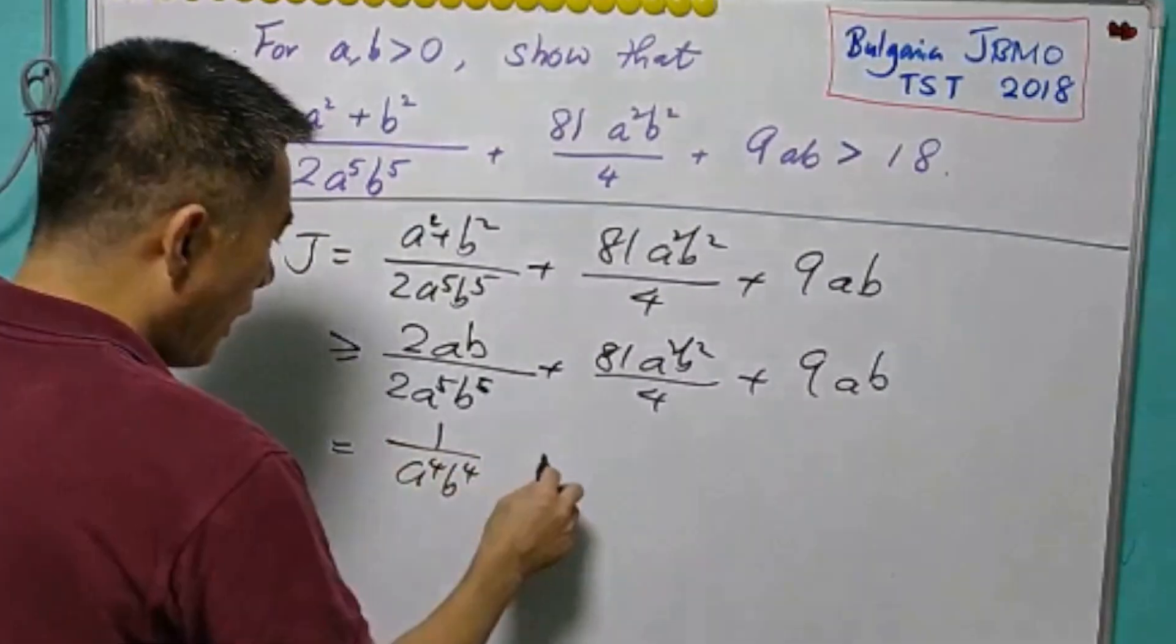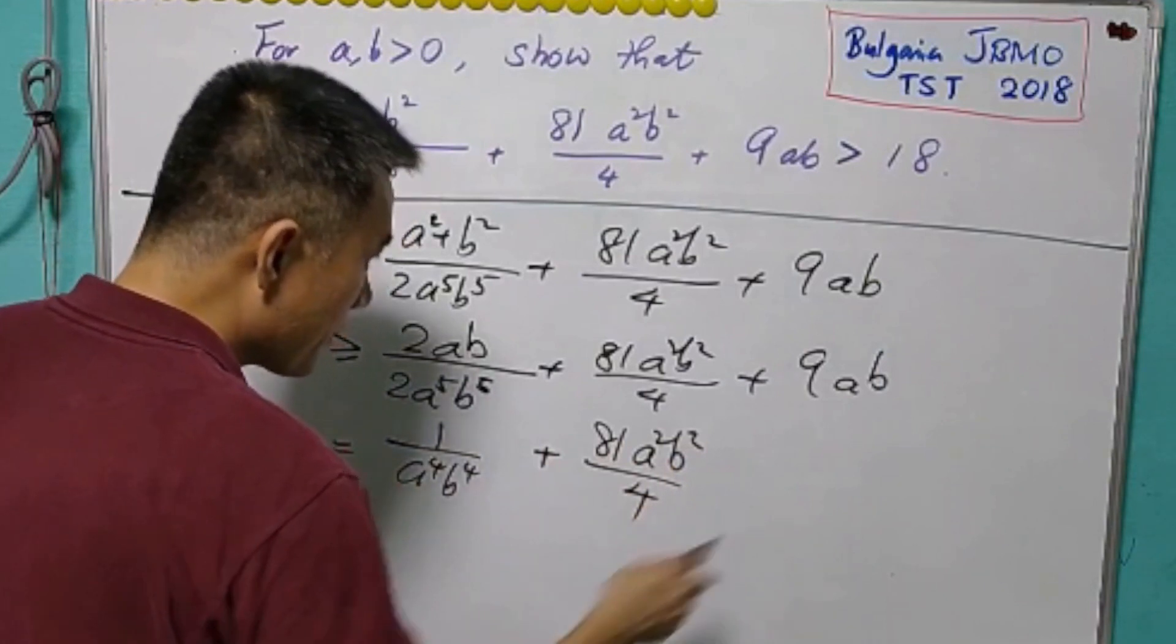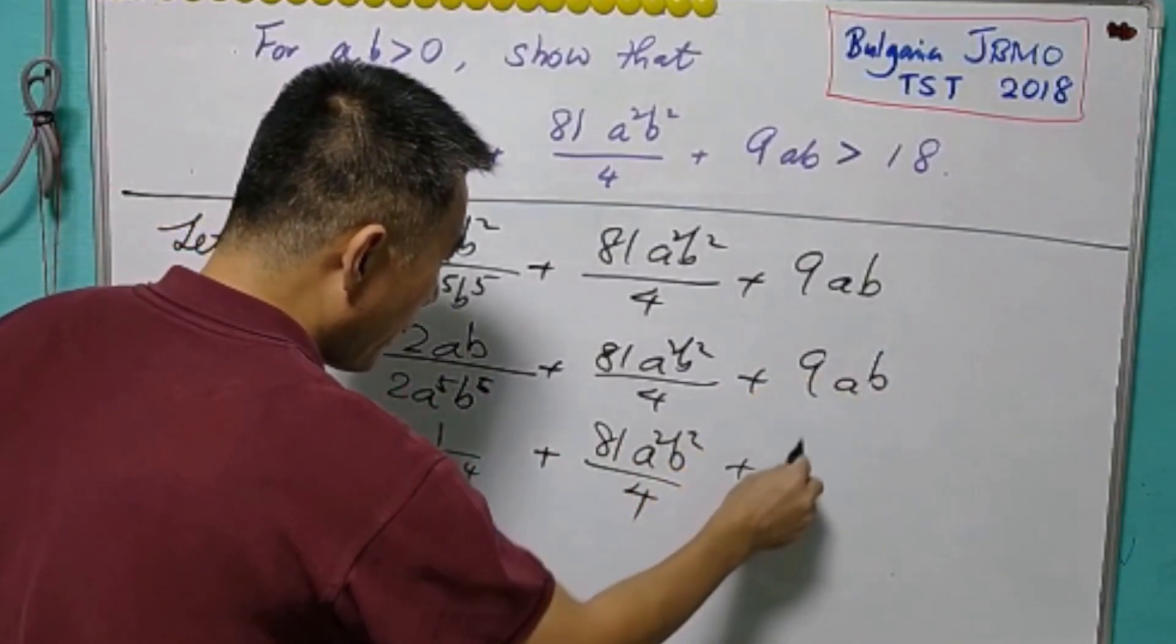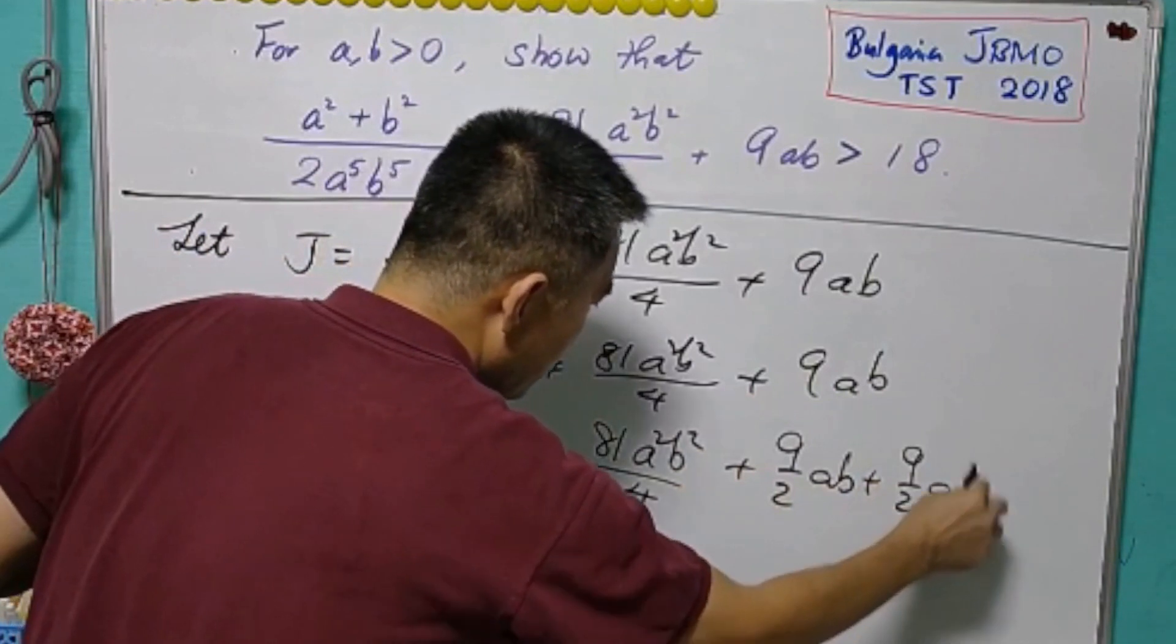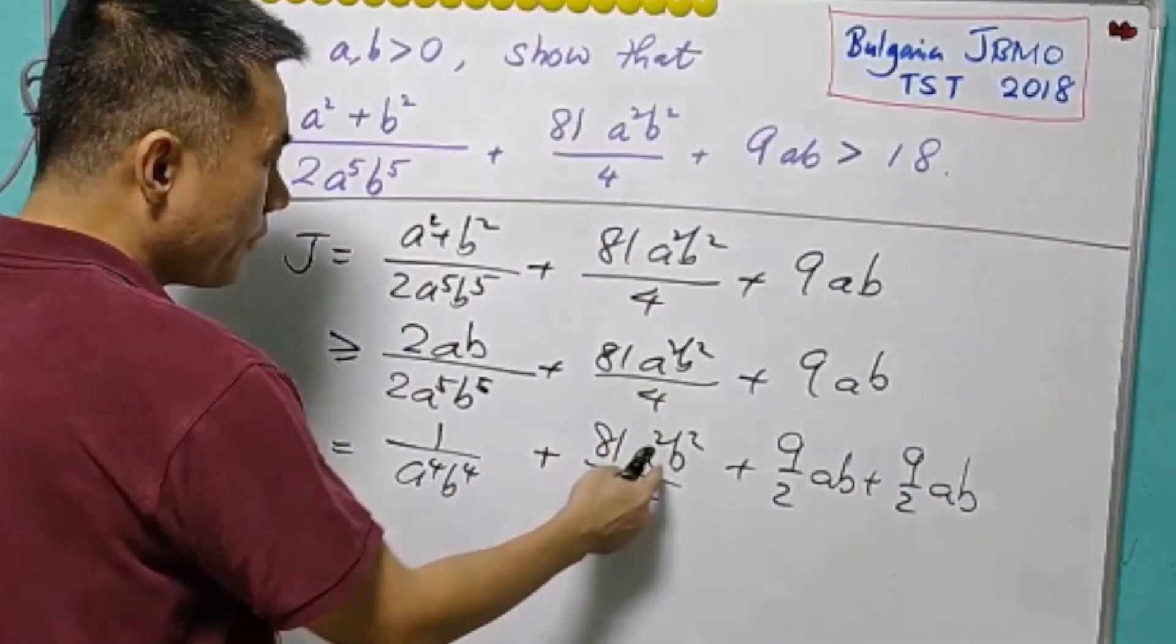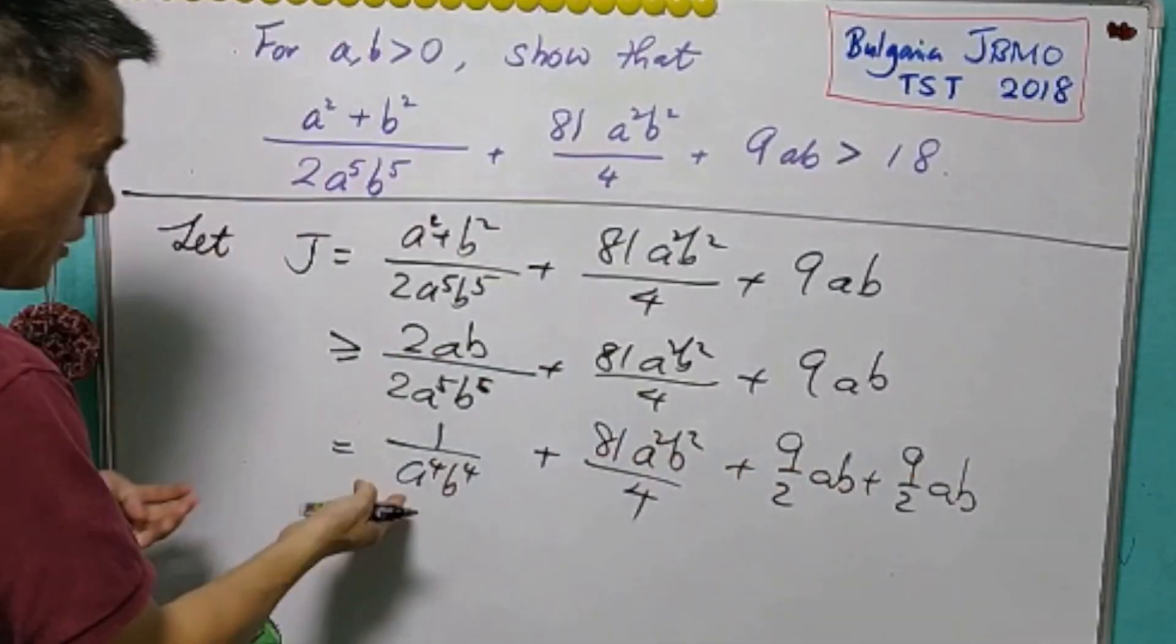So I will make it as 81a²b². All still remain the same. But for 9ab, I will change it as 9 over 2ab plus 9 over 2ab. So that the power of a in the denominator will be sum of 4, same as the power in the numerator.